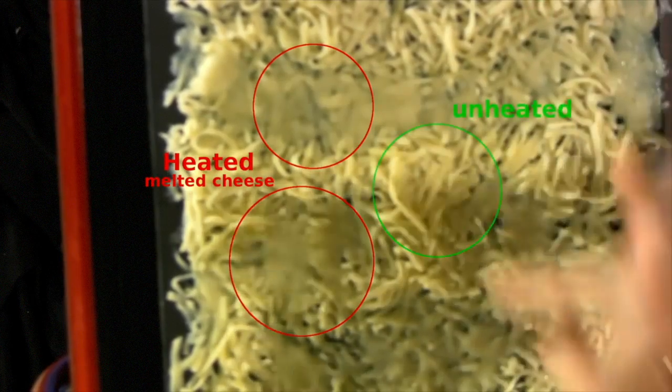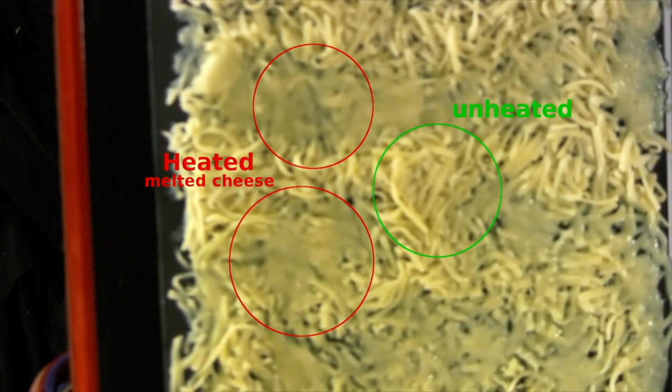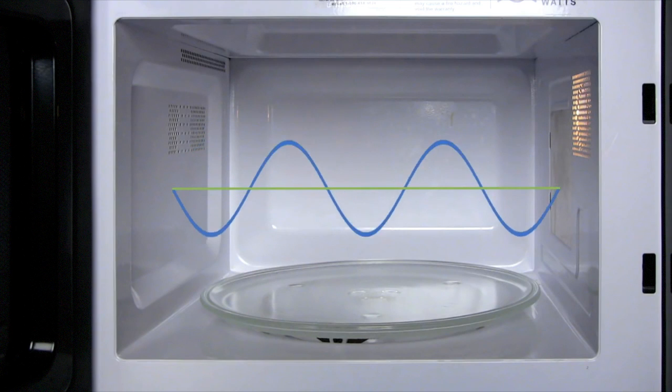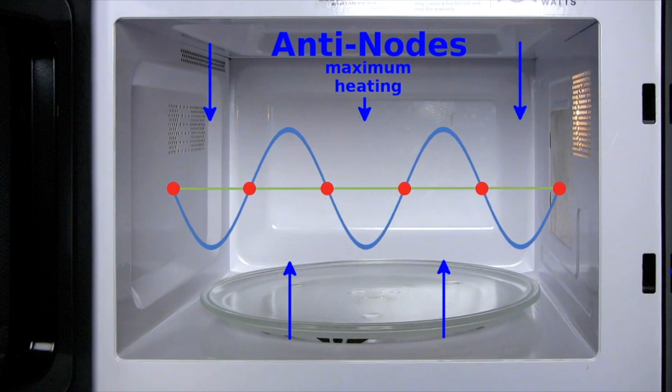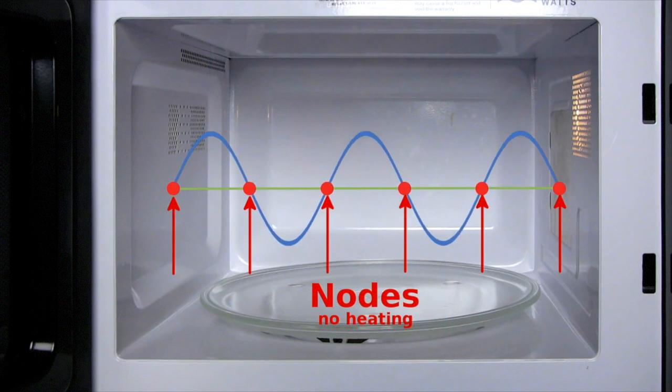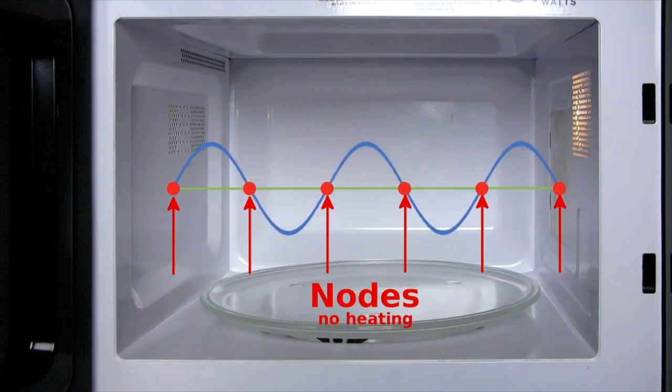Another reason your food might be unevenly heated is that the radio waves produced from the magnetron move up and down. There are peaks in the waves called antinodes, where the wave is the hottest on the food, and spots in between called nodes, where the wave does not emit any heat.